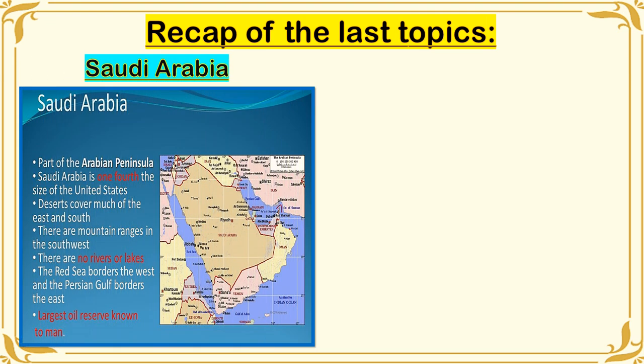The first one is Saudi Arabia. Saudi Arabia is part of the Arabian Peninsula. It is also one-fourth the size of the United States. Deserts cover much of the east and south. There are mountain ranges in the southwest and there are no rivers or lakes, but there is the Red Sea that borders the west and the Persian Gulf borders the east. It is also known as having the largest oil reserve in the world.